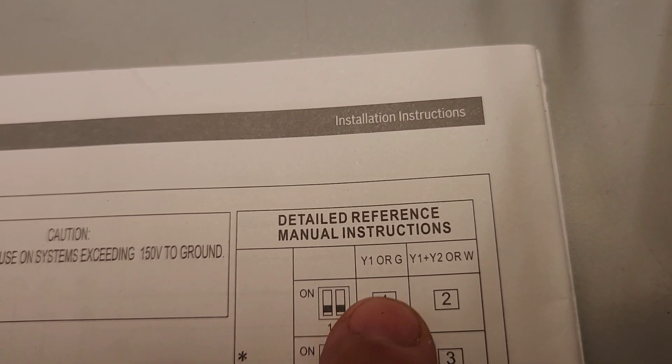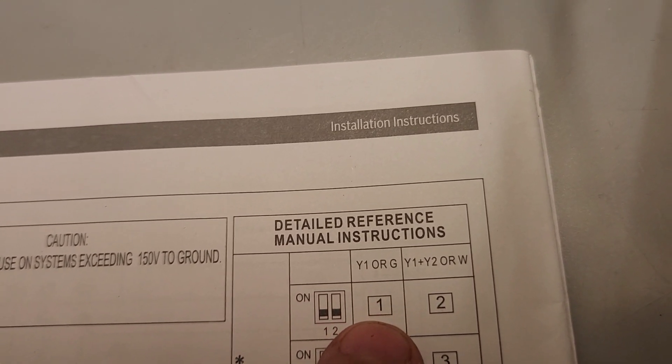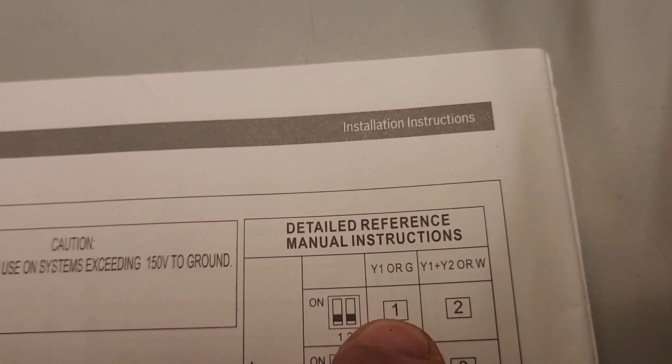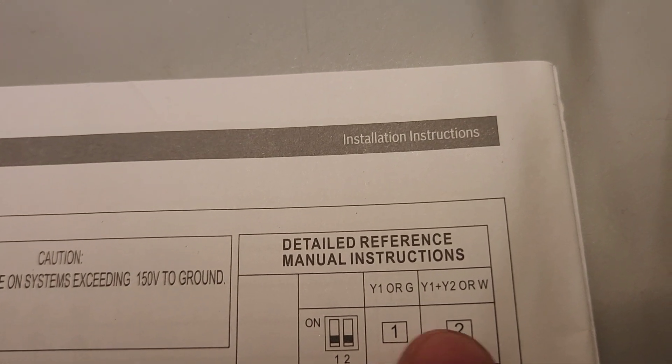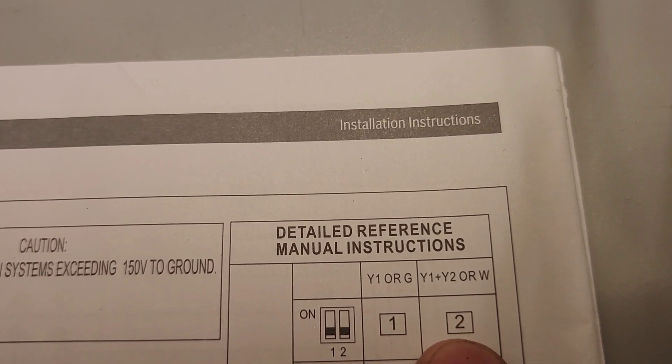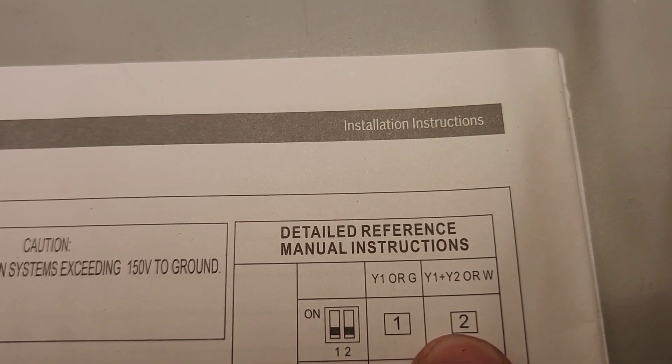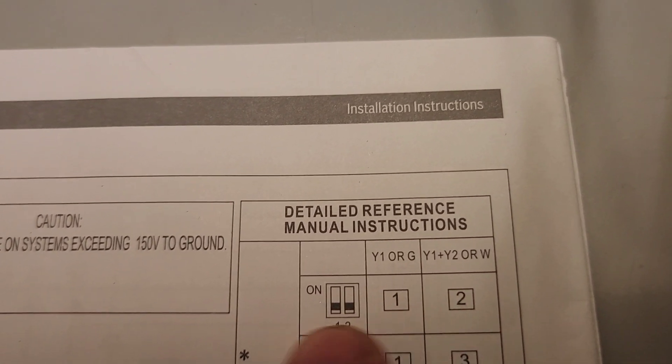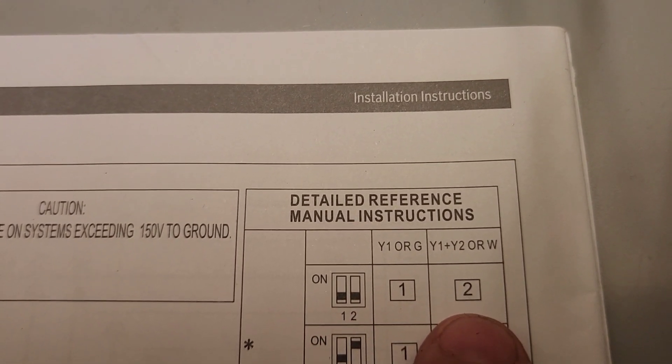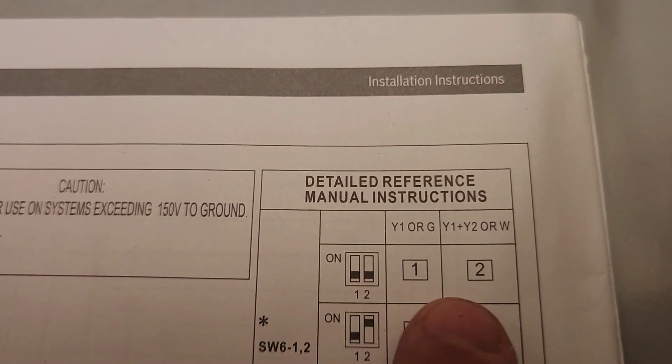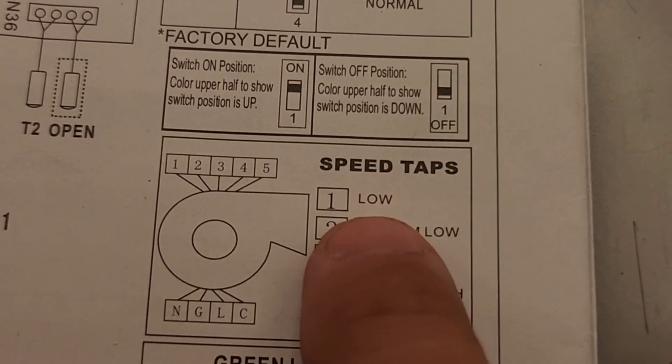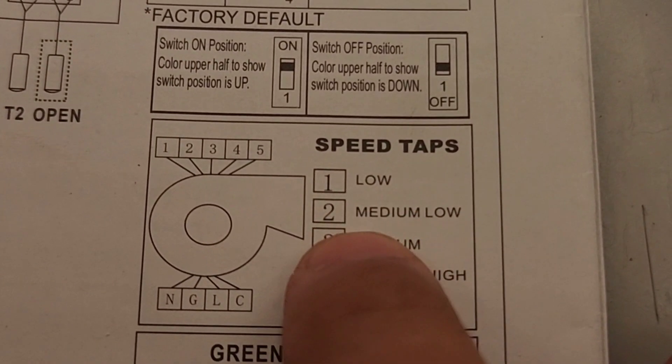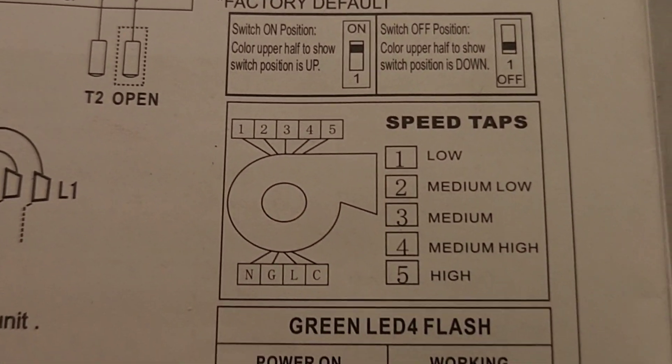So what this is telling us is that when we're getting only Y1 or a G call, we're running a speed number one. When we're getting a Y2 or a W call, this is going to run a higher fan speed, and that's going to get speed number two. Well again, that still doesn't tell us what CFMs we're running. Now let's go to the next step. As you can see, speed tap one is considered low, speed tap two is considered medium low.